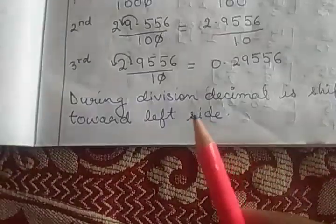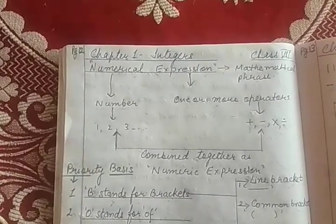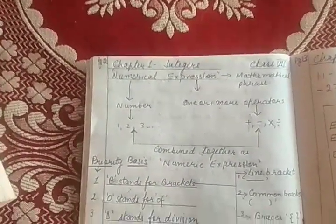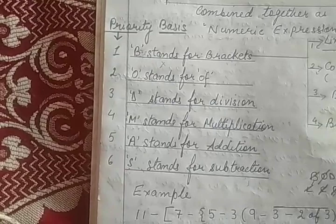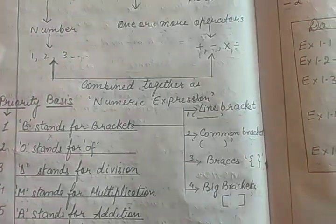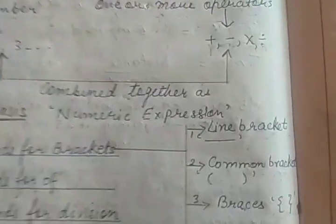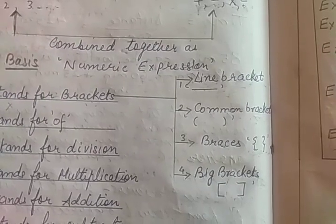During division, the decimal is shifted towards the left side. For BODMAS — which I have already discussed in chapter 1 on integers — a numerical expression uses different operators on a priority basis. B stands for bracket, O for off, D for division, M for multiplication, A for addition, S for subtraction. In brackets: first priority is line brackets, then common bracket, then braces, then big bracket.